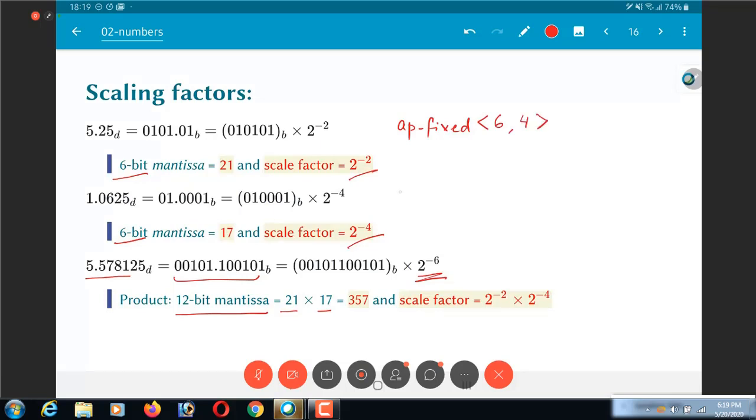Whereas this one would be AP_fixed 6, 2 because there are only two integers. And this one over here would be AP_fixed of 12, 6.